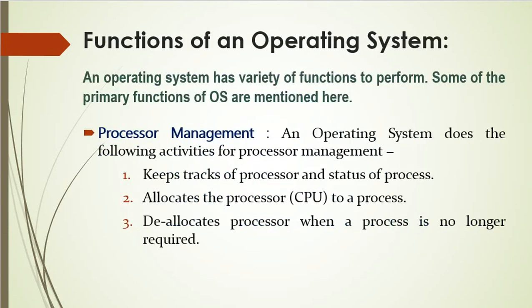Now we will learn some important functions of the operating system. The operating system has a variety of functions to perform. The first one is processor management. The operating system allocates the processor to execute a process and deallocates the processor when it is no longer required. It keeps track of all processes and the status of each process. Nowadays we use a multiprogramming operating system, so more than one process can run on the computer system simultaneously.